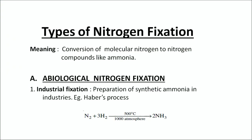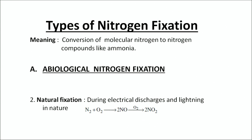Nitrogen fixation is the process of conversion of molecular nitrogen to nitrogen compounds such as ammonia. The first type is called abiological nitrogen fixation because it does not involve any microbes. The first process under abiological fixation is Haber's process — the preparation of synthetic ammonia at the industrial level, where nitrogen combines with hydrogen under high temperature and high pressure to form ammonia. The second abiological process is natural fixation, which occurs during electrical discharges and lightning in nature.